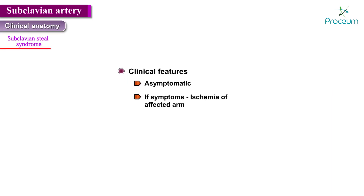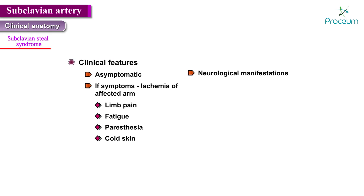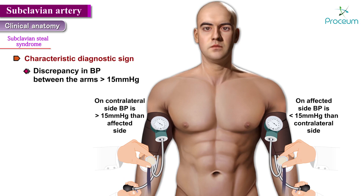When symptoms do occur, they are mainly caused by ischemia of the affected arm and include limb pain, fatigue, paresthesia, and cold skin. Neurological manifestations such as dizziness or syncope can also be seen, though syncope is rare and usually occurs in the presence of cerebrovascular lesions. The characteristic diagnostic sign — often asked in exams — is a discrepancy in blood pressure between the two arms of greater than 15 mmHg.